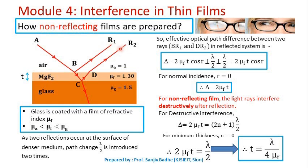As the condition for minimum is satisfied, the two rays cancel each other's effect and we get total darkness — so nothing is reflected. This is how non-reflecting films are formed. Let us now calculate the thickness required to get the non-reflecting film.